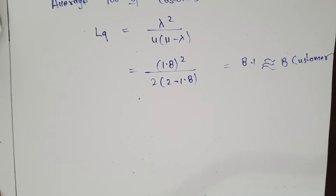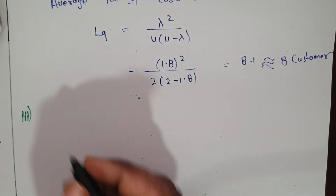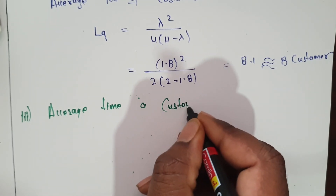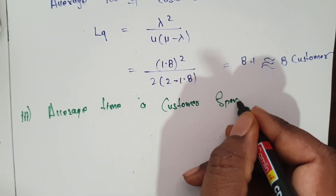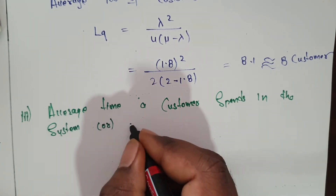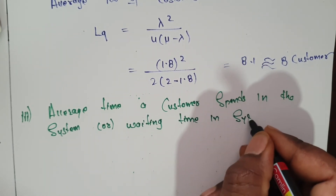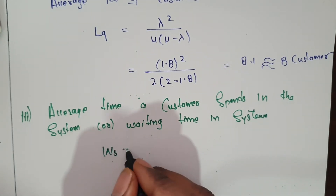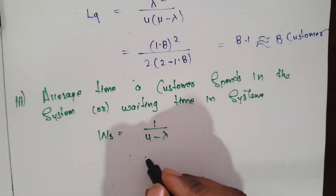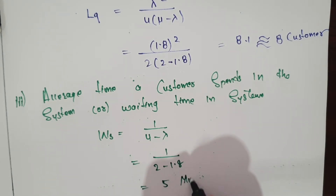Third bit: find the average time a customer spends in the system, also called waiting time in the system. This is Ws. The formula is Ws = 1 / (mu minus lambda). Mu is 2 and lambda is 1.8, so Ws = 1 / (2 - 1.8). Solving this gives 5 minutes.